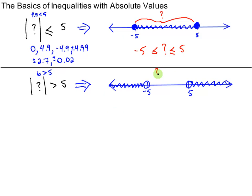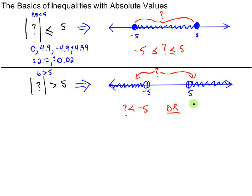So any number over here also works. Question mark could be here or it could be here. Question mark could be less than negative 5 according to the left side of the graph, or — remember this was an 'and' up above, this one's an 'or' — question mark could be greater than positive 5. So you get an 'or' statement, which results in a union. If I make this 'equals,' then these endpoints become included.